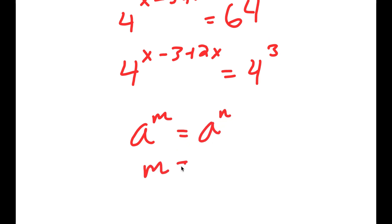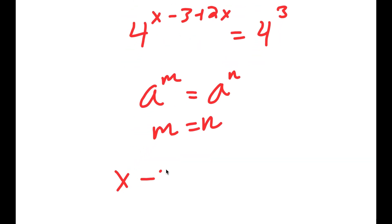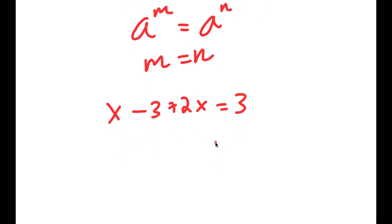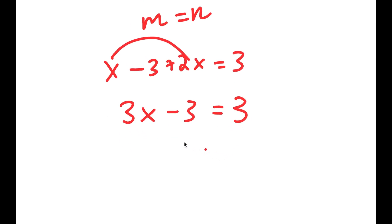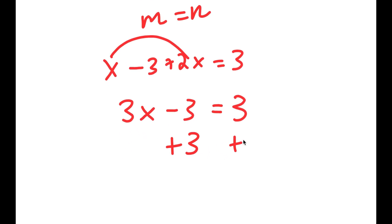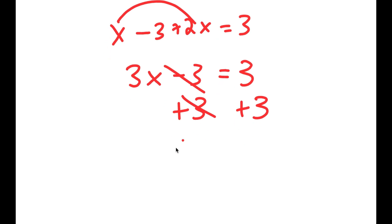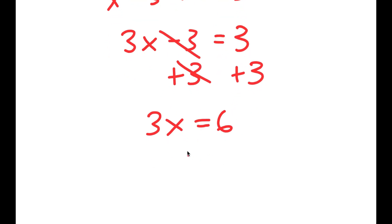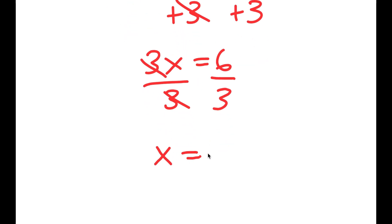Since the bases are equal, the exponents must be equal, so x minus 3 plus 2x equals 3. Combining like terms, x plus 2x gives 3x, so 3x minus 3 equals 3. Adding 3 to both sides gives 3x equals 6, and dividing both sides by 3 gives x equals 2.